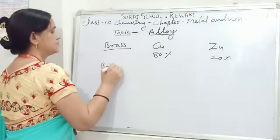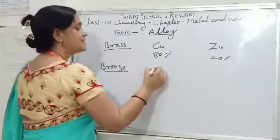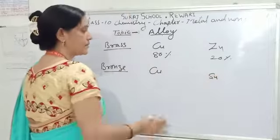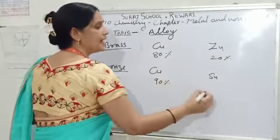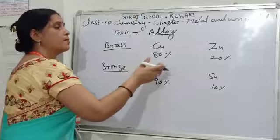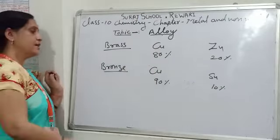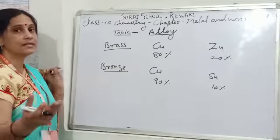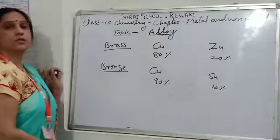Bronze has the constituent elements copper and tin. Copper is at 90% and tin is at 10%. So if we mix copper and tin in the ratio of 90 to 10%, we get bronze. Bronze is used to make utensils, medals, and coins.